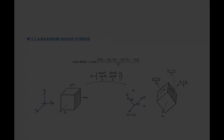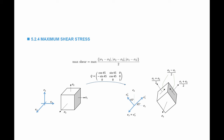The maximum shear stress is obtained by reorienting the cube by 45 degrees in the plane with the maximum difference between principal stress components. For example, if the difference between sigma_1 and sigma_2 is highest, rotate the cube 45 degrees in the plane of E1 and E2. With Q having components cosine 45, sine 45, negative sine 45, cosine 45, the normal stresses become (sigma_1 plus sigma_2)/2, and the shear stress equals (sigma_2 minus sigma_1)/2, which is the maximum shear stress.